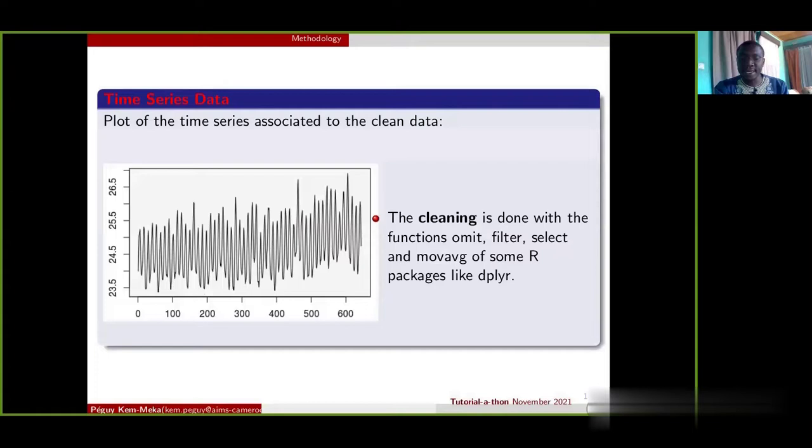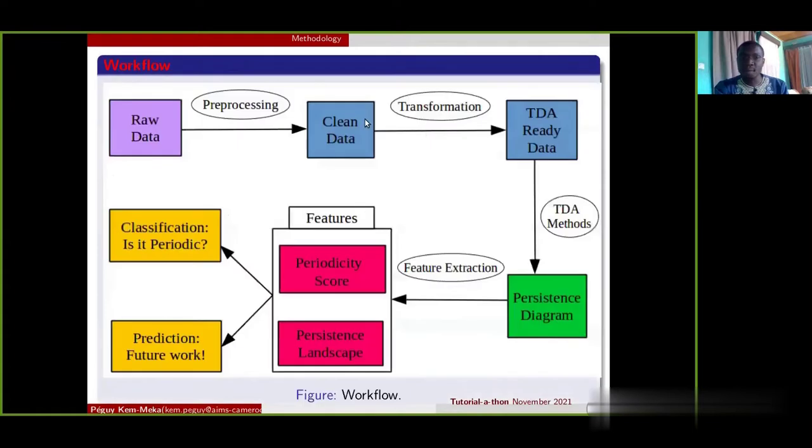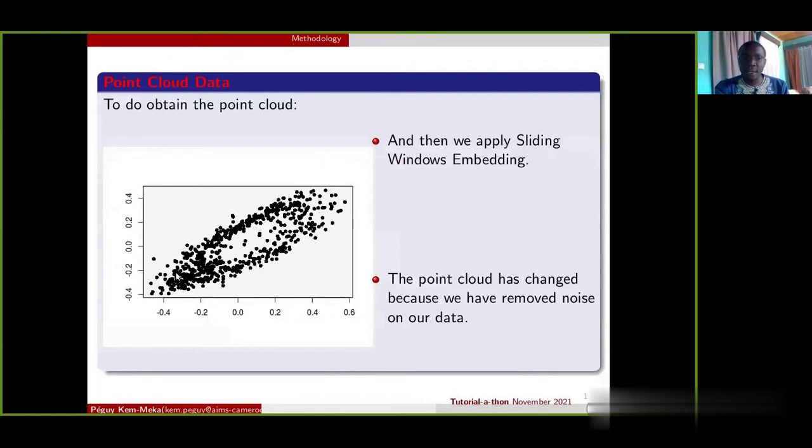When we have our clean data, we then apply data transformation to have the data that we can apply TDA method on. We mean that to get a point cloud. For data transformation, we have used sliding window embedding. There are several tutorials on this channel that explain sliding window embedding.